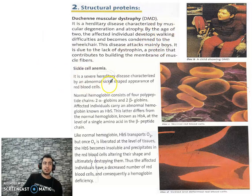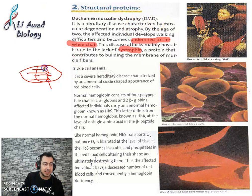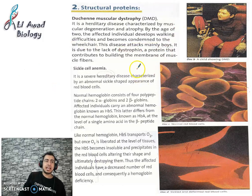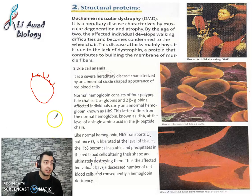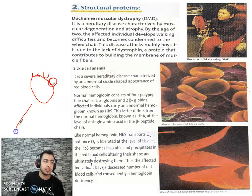Duchenne muscular dystrophy is due to an abnormal structural protein — dystrophin — which is produced inside the muscle and builds it up without leaving the muscle. Now, sickle cell anemia: this is a hereditary disease. On the surface of red blood cells, there are hemoglobin molecules, which carry oxygen and transport carbon dioxide. All hemoglobin molecules are formed from four chains of a protein called globin protein.